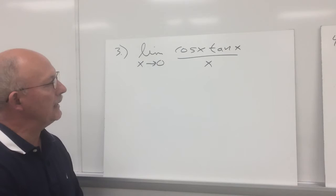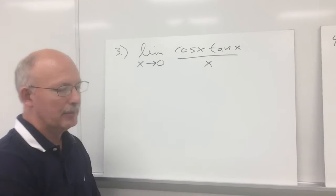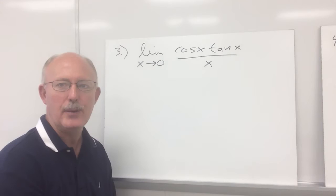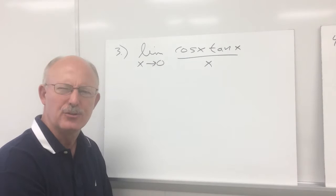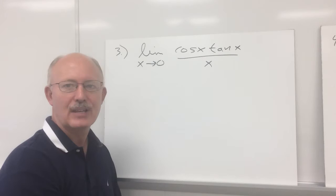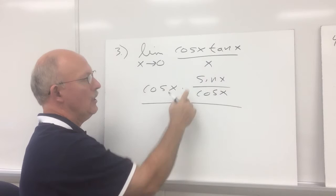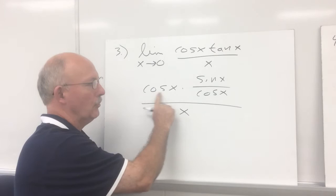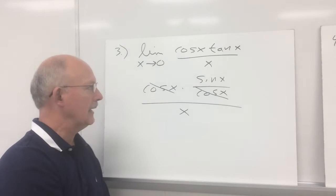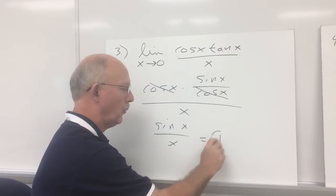Let's try problem number 3. We've got the limit as x approaches 0 of cosine x times tangent x over x. Looking at this problem, I need to get sin x over x somehow. We're going to rewrite tangent x as sin x over cosine x. So we have cosine x times sin x over cosine x, all over x. The cosine x's cancel, and we end up with sin x over x, which is equal to 1. So the limit of this function should be 1.